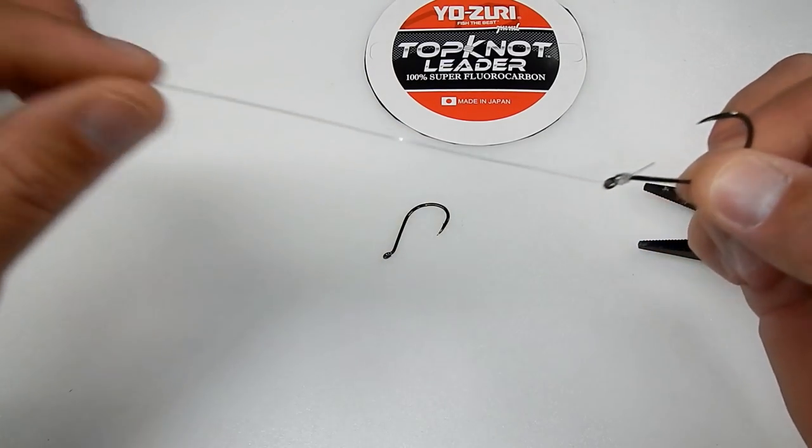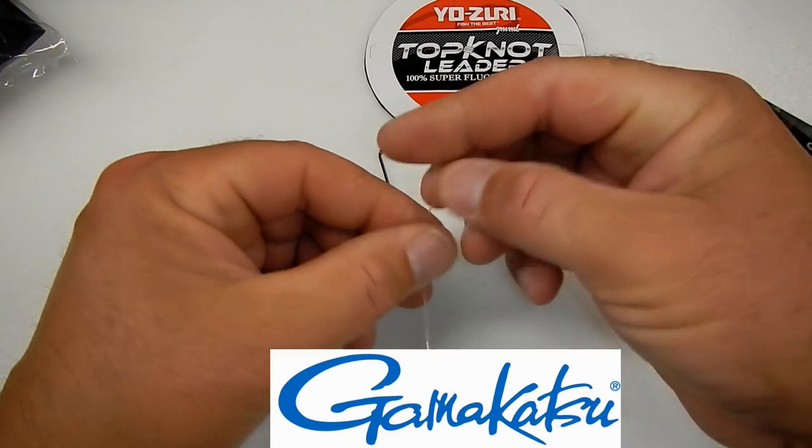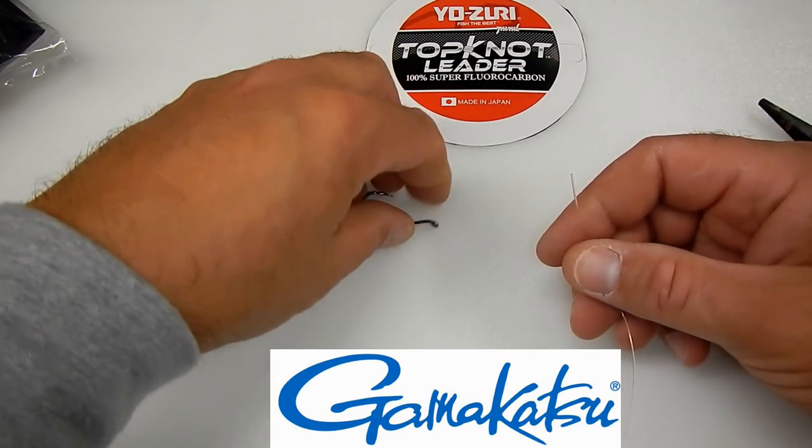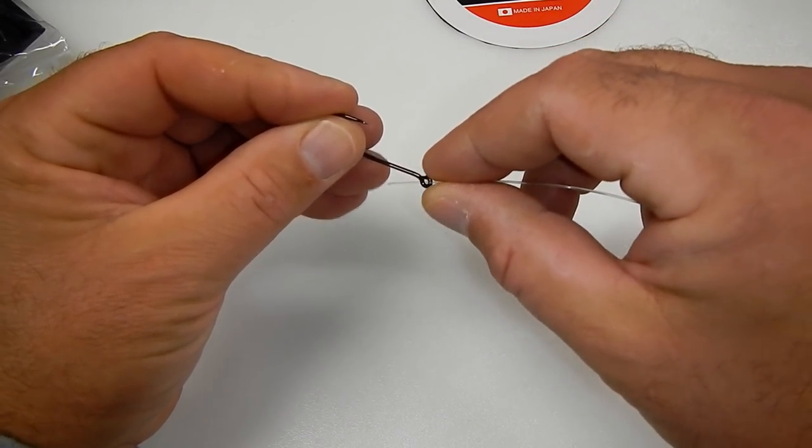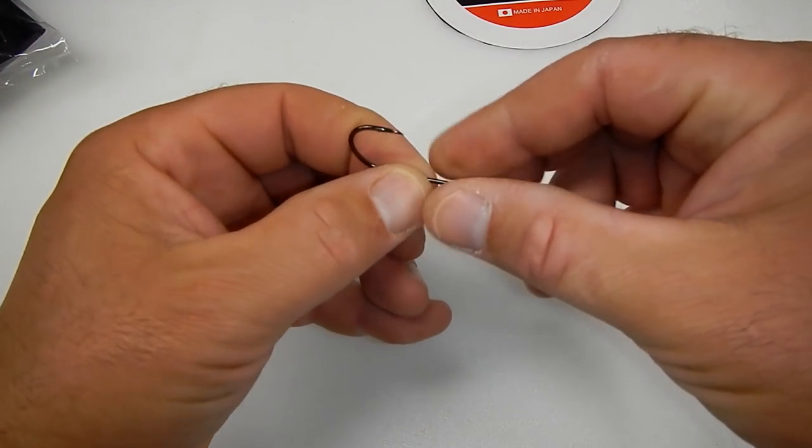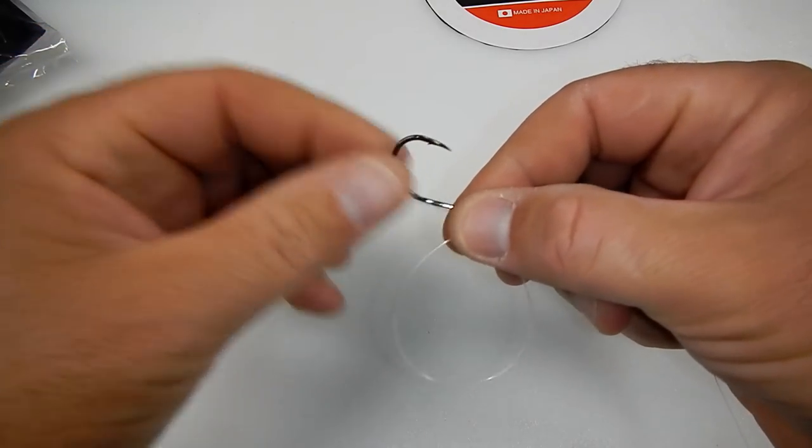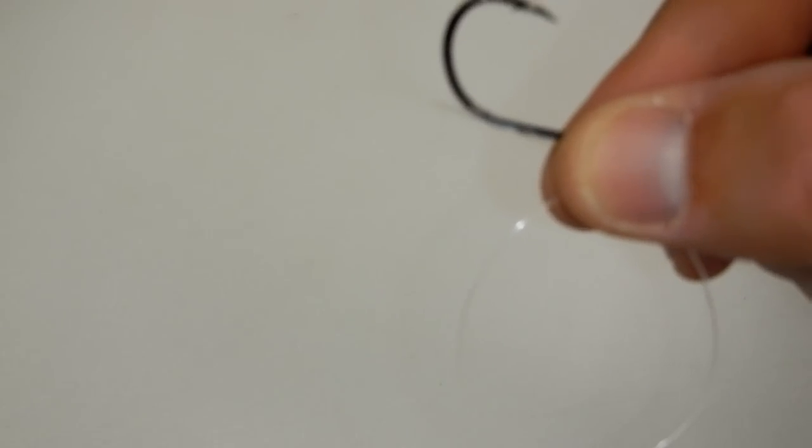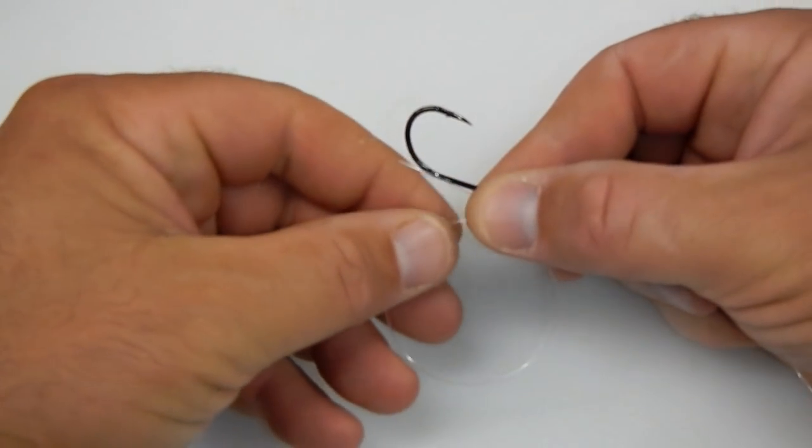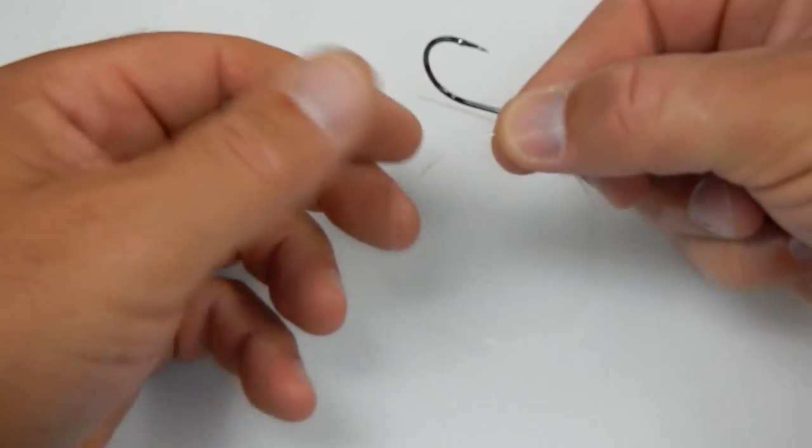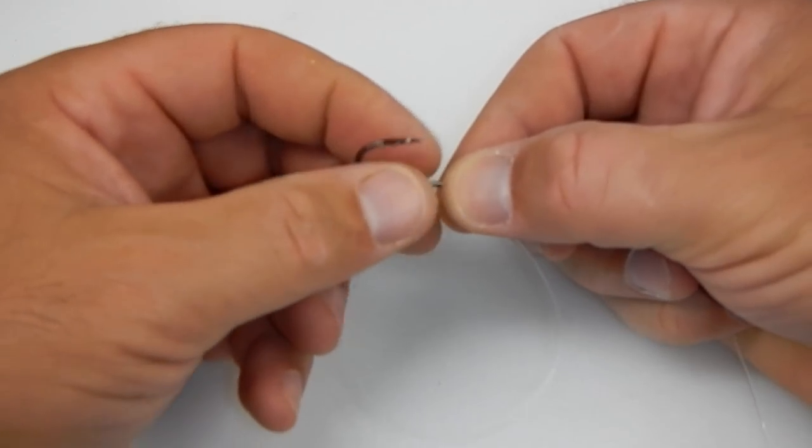So now let's go to the other side. This is all being done with one length of fluorocarbon. Now grab the other hook and again same thing, thread it through the eye of the hook, bring it through, give yourself some working area. Make sure you give yourself the working line that you need and start doing loops around the shank of the hook.